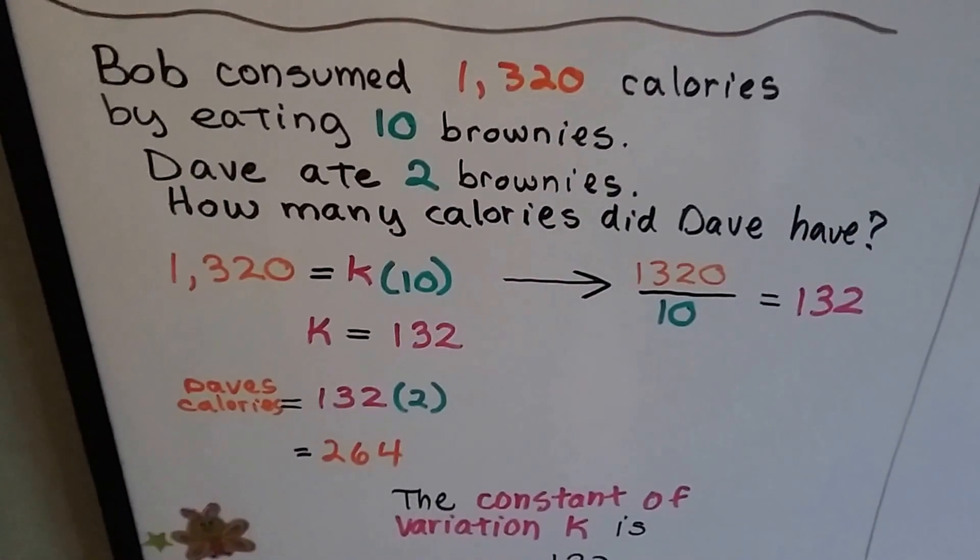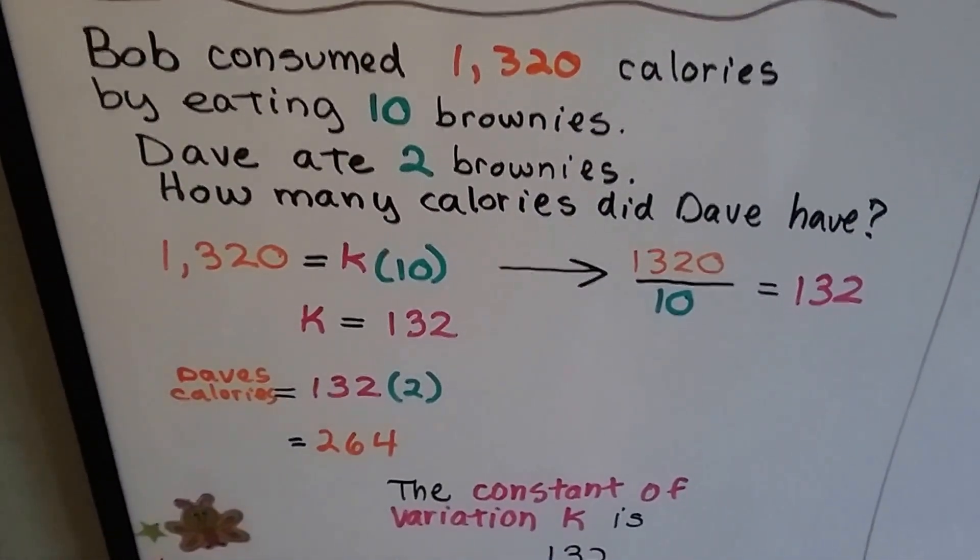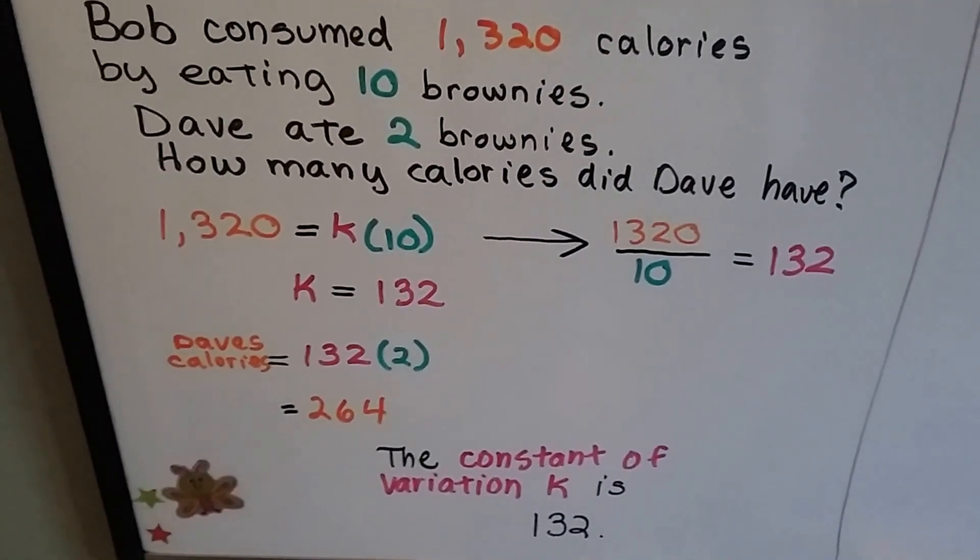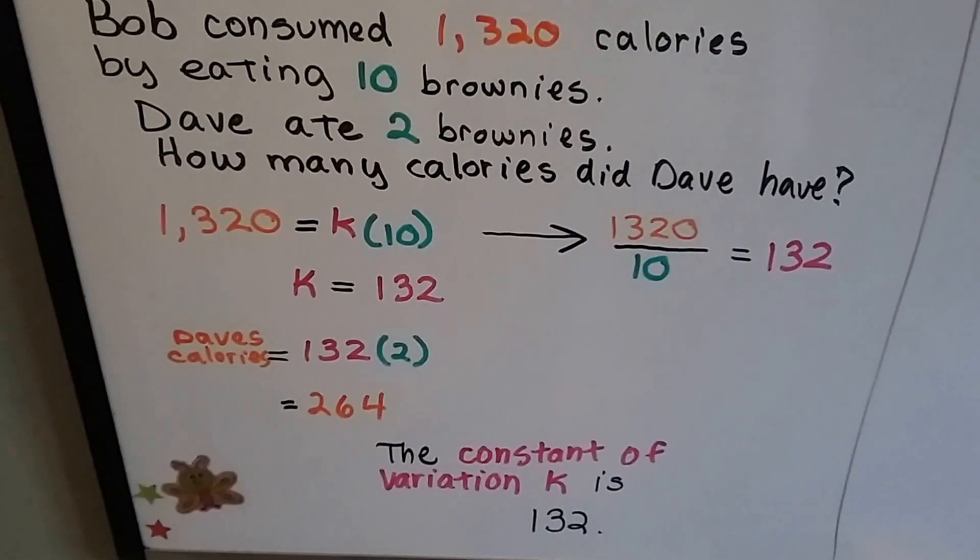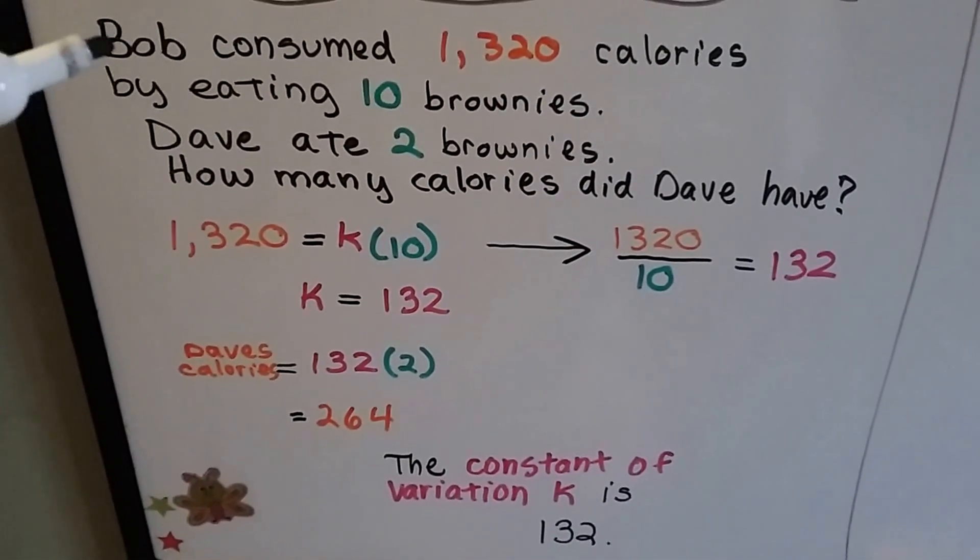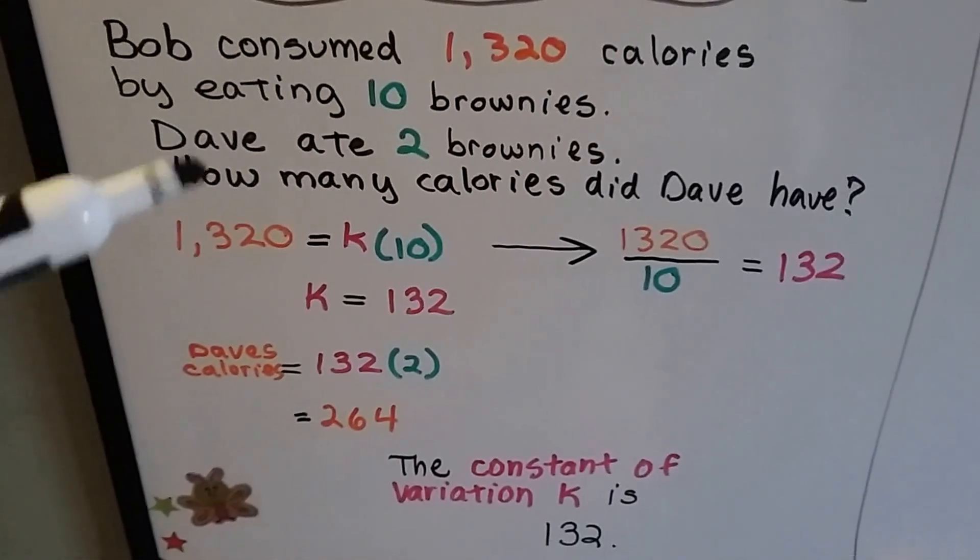So let's look at this word problem. Bob consumed 1,320 calories by eating 10 brownies. And Dave ate 2 brownies. How many calories did Dave have?